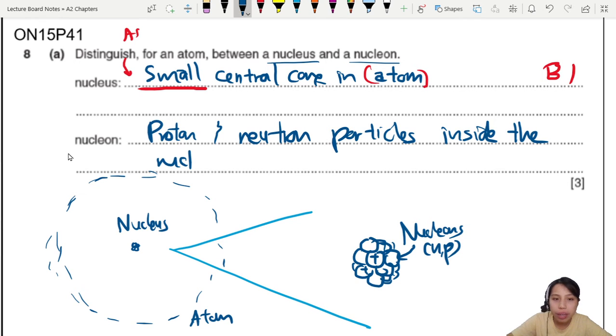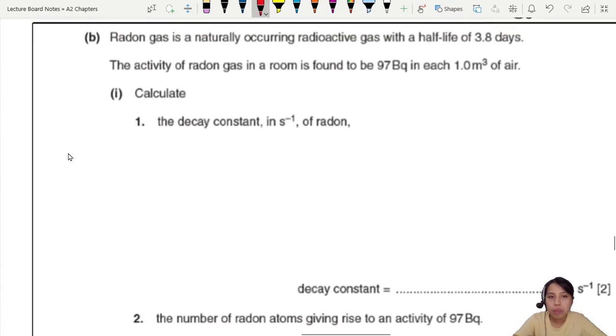This one is three marks? Oh wow, two marks. So if you talk about particles inside the nucleus, that's one mark. If you talk about what they are, protons and neutrons, there's another mark. Pretty interesting one.